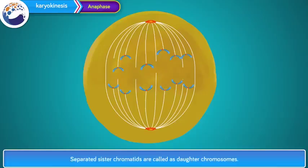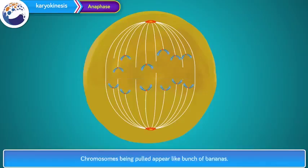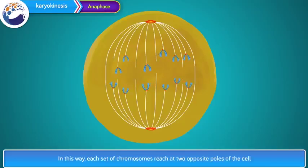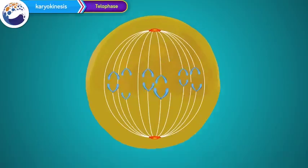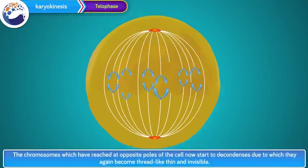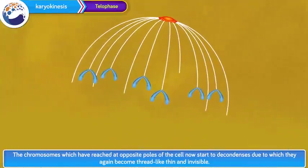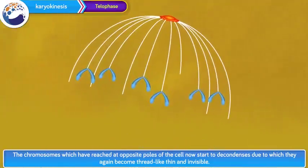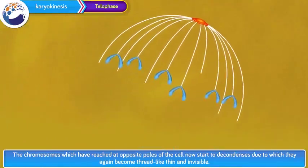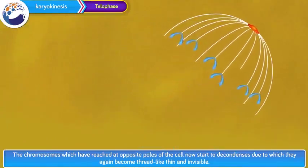In anaphase, centromeres split and thereby sister chromatids of each chromosome separate. They are pulled apart in opposite directions with the help of spindle fibers. Separated sister chromatids are called daughter chromosomes. Chromosomes being pulled appear like a bunch of bananas. In this way, each set of chromosomes reaches the two opposite poles of the cell.